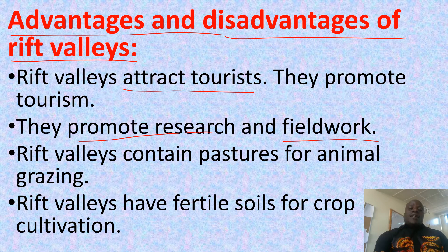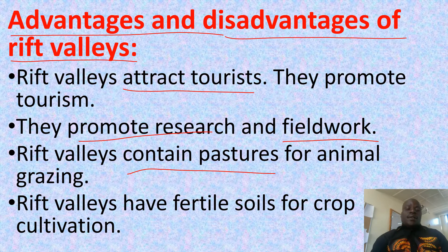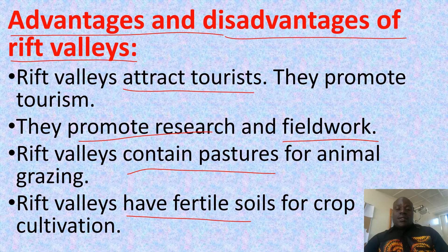Rift valley lakes contain pastures for animals, so they promote animal grazing. Rift valleys also contain fertile soils and thus promote crop growing.